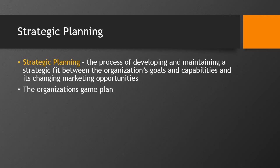Strategic planning is basically the stage that's set for all business planning. Companies will generally prepare an annual plan, some long-range plans — those are five or more years — and they'll have strategic plans. Annual plans and long-range plans tend to deal with the company's current business.